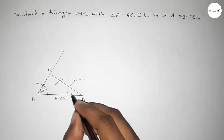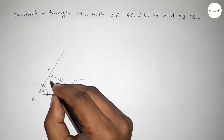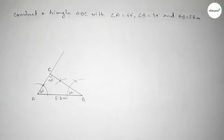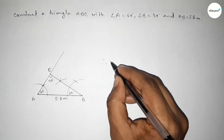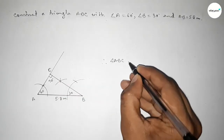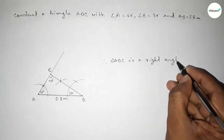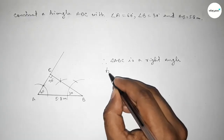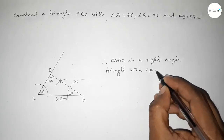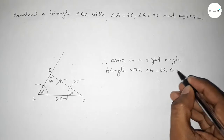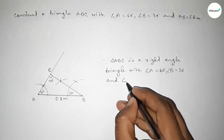This side is 5.8 centimeters, this angle is 60 degrees, this angle is 30 degrees, and this is obviously 90 degrees since 30 plus 60 equals 90, and 90 plus 90 equals 180. Therefore triangle ABC is a right angle triangle with given angle A equal to 60 degrees and angle B equal to 30 degrees.